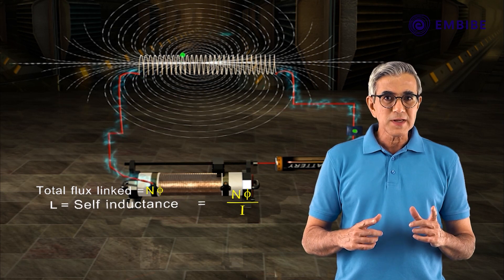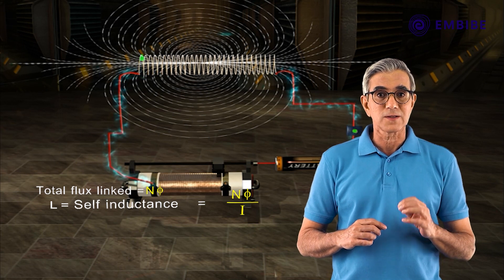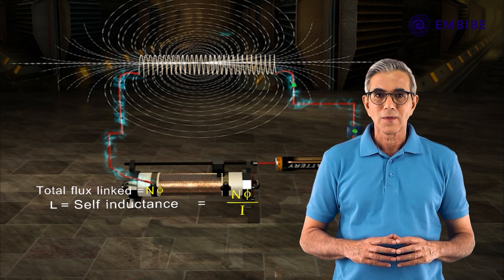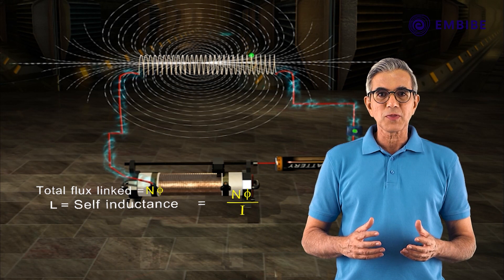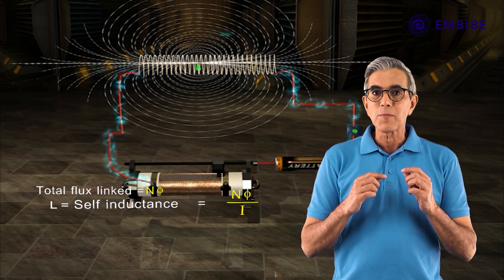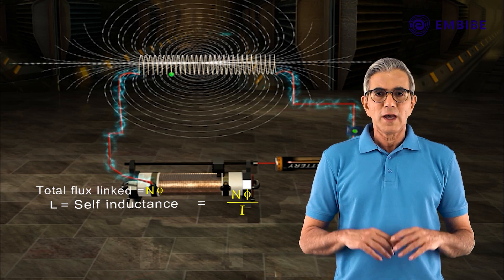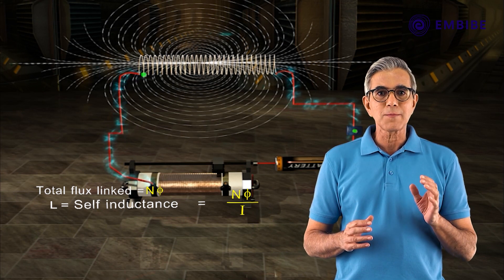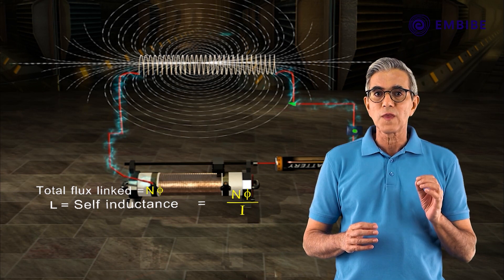The parameter L is called the self-inductance of the coil. Its value depends upon the size and the shape of the coil, as well as the number of turns. It also depends upon the magnetic property of the medium within the coil.